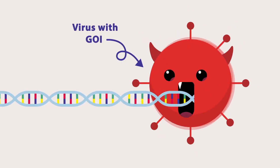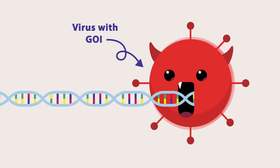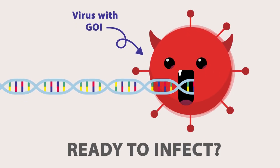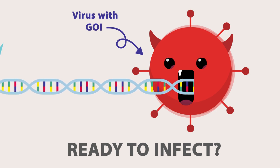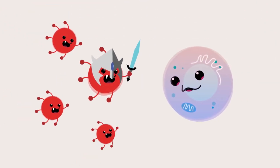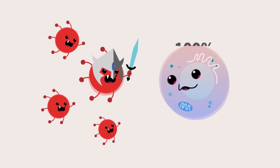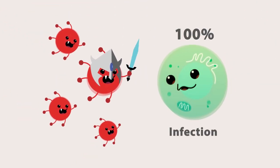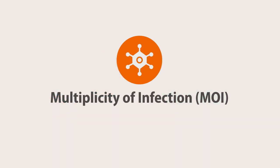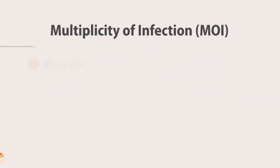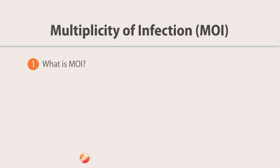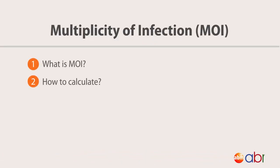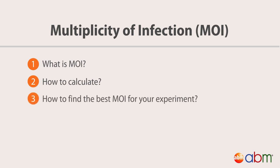So you've packaged your DNA into a virus, and you're ready to infect your cells. But how many viral particles are required for 100% infection? In this video, we'll explain the concept of Multiplicity of Infection, or MOI, and take you through how to determine the best MOI for your experiment.